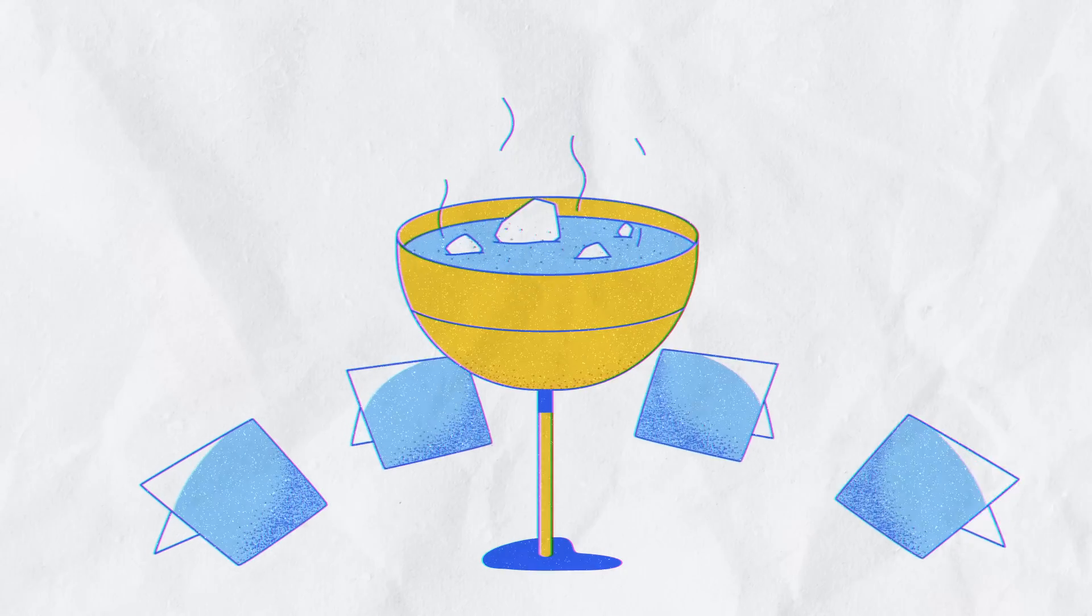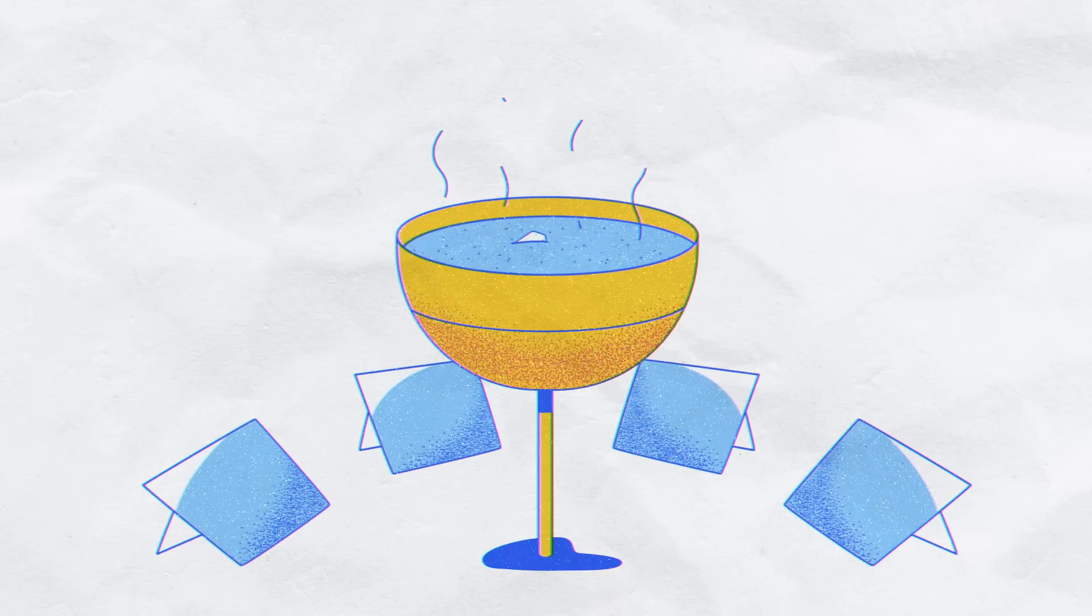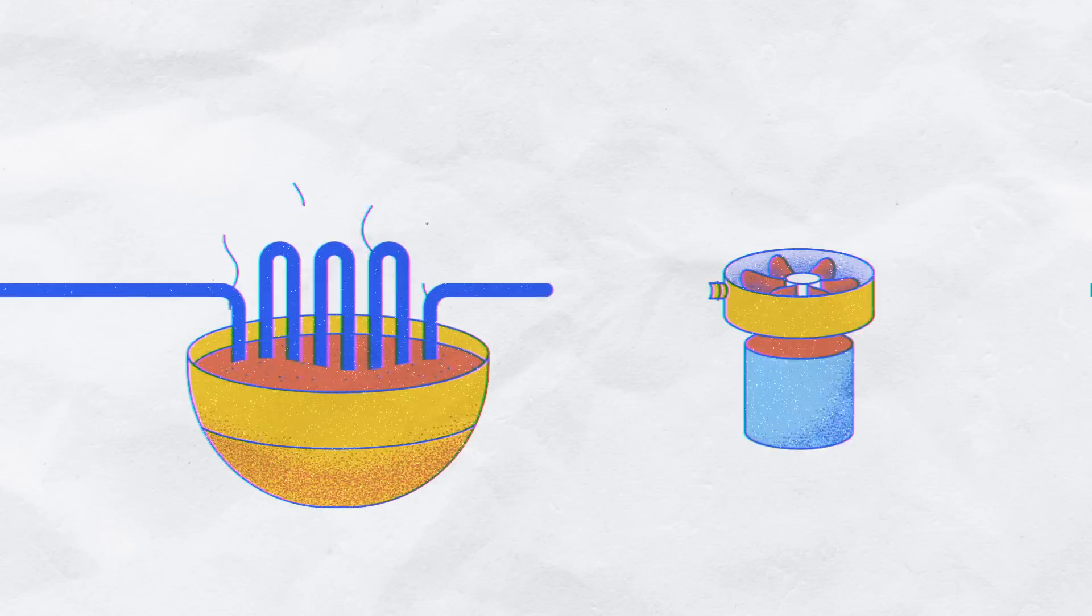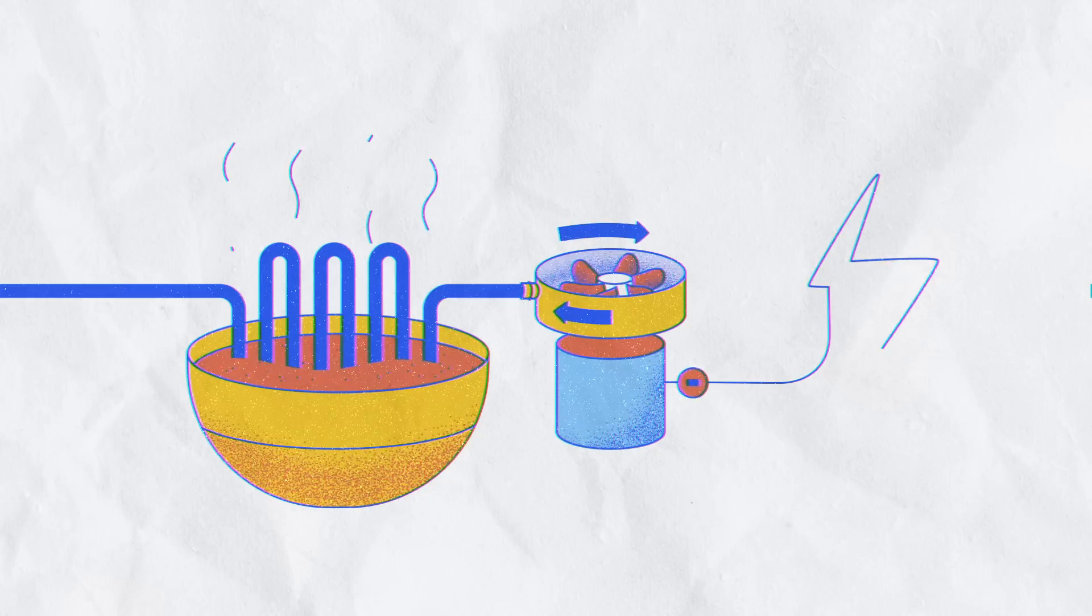Though there have been some early setbacks, another promising approach involves heating up salts until they melt. The molten salts can be stored until there's a high demand for electricity, then used to boil water.